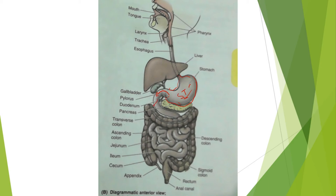The duodenum receives juices from the pancreas and from the liver. Digestion takes place in the stomach as well as in the duodenum, due to gastric juice, pancreatic juice, and bile. Once the food is digested, it comes into the small gut — duodenum, jejunum, and ileum. The function of the small gut is mostly absorption: all the useful chemical nutrients are absorbed.